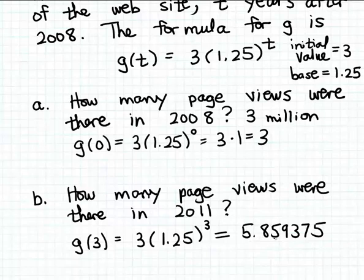So take the 5.859375 there and multiply it by 1 million, and that gives us the number of page views. So it's 5,859,375 if we want to calculate that exactly.